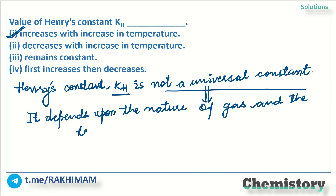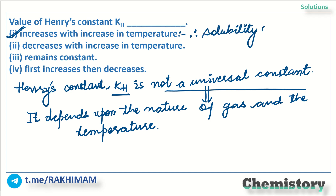Henry's constant KH increases with an increase in temperature, therefore the solubility of the gas decreases. So, increasing the pressure increases the solubility, and increasing the temperature decreases the solubility of the gas in the liquid.